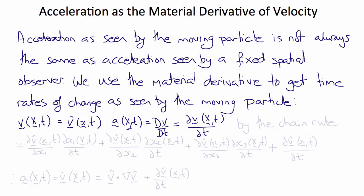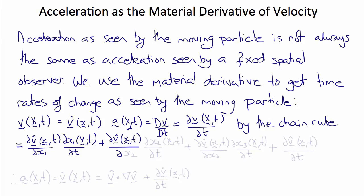We can then evaluate this in terms of v-hat using the chain rule, which gives us: del v-hat of little x and t / del x1 times del x1 of big X and t / del t, plus del v-hat / del x2 times del x2 of big X and t / del t, plus del v-hat / del x3 times del x3 of big X and t / del t, plus del v-hat of little x and t / del t.